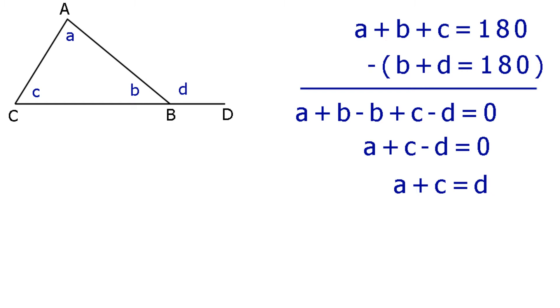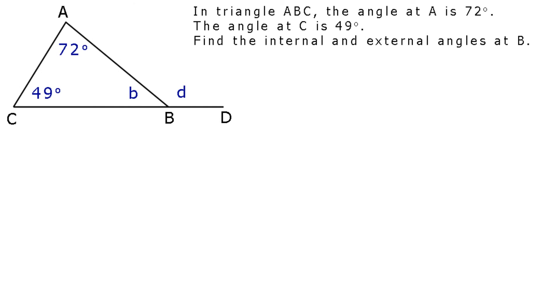In other words, the value of an external angle equals the sum of the two opposite internal angles. Now, before you ask, opposite internal refers to the two angles at the corners of the triangle in a direction away from the external angle. Just to make all that sink in, time for a few problems.